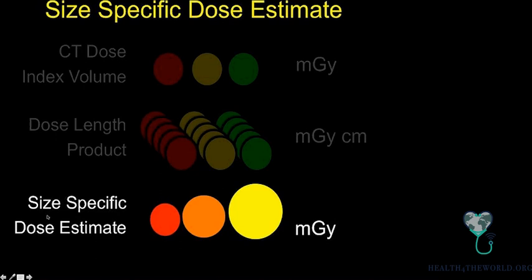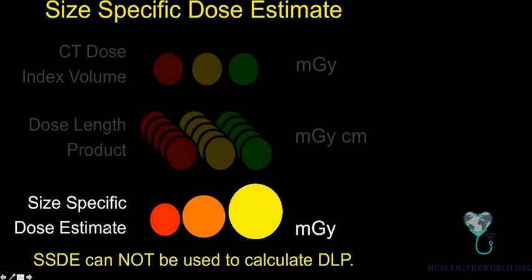There is also something called the Size-Specific Dose Estimate (SSDE), referenced in some papers. Like CTDI volume, it reflects average slice dose, but it takes into account how big the patient is — adjusting for a larger or smaller patient. It's only in milligray, and you can't use SSDE to calculate DLP. It's a dead-end number used in literature, not something on your standard report because current scanners don't account for patient size automatically.